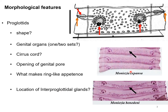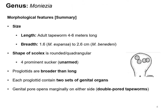The interproglottidal gland is present in both Moniezia expansa and Moniezia benedini, and one can easily morphologically differentiate which species is which based on this gland. In Moniezia expansa, the interproglottidal gland is distributed across the full breadth of the proglottid. In Moniezia benedini, it is more compact and located in the middle of the proglottid.